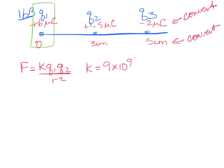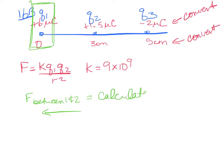For the first part, only look at what's happening to Q1. Q1 is positive and Q2 is positive, so they repel — the force between 1 and 2 pushes Q1 to the left. Q1 is positive and Q3 is negative, so they attract — Q3 pulls Q1 to the right. You need to calculate both forces using KQ1Q2 over R squared.